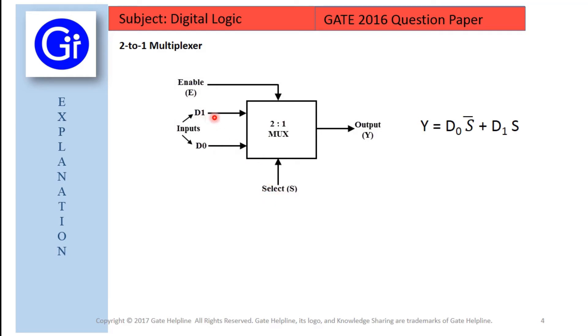The figure shows the block diagram of 2 to 1 multiplexer which connects two 1 bit inputs to a common destination Y. So we can define this Y as D0S bar plus D1S.